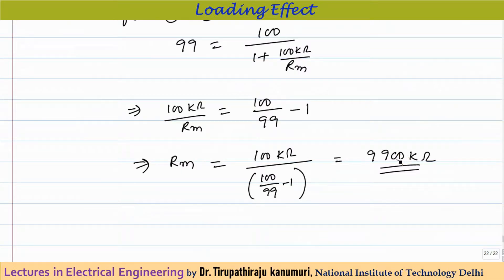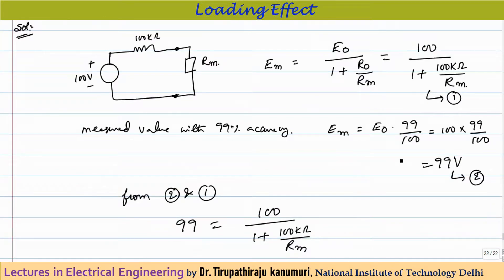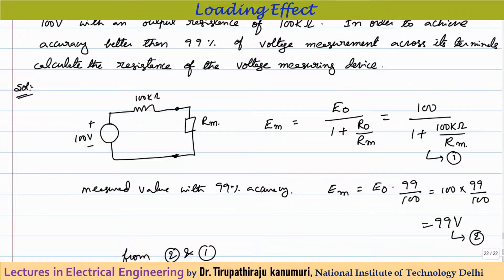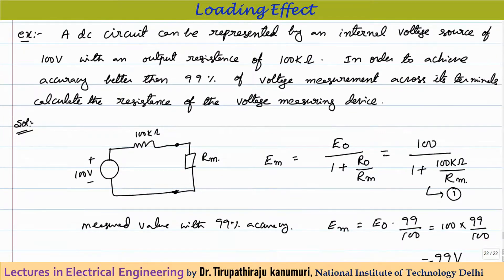This illustrates the loading effect due to instrument resistance. If the measuring instrument has a much lower impedance — say only 1 kΩ — it would drastically affect the measured voltage. In the next class, we will solve two more numericals from previous IES exams on loading effect and errors to make this concept completely clear. If you have any queries, leave them in the comments below.